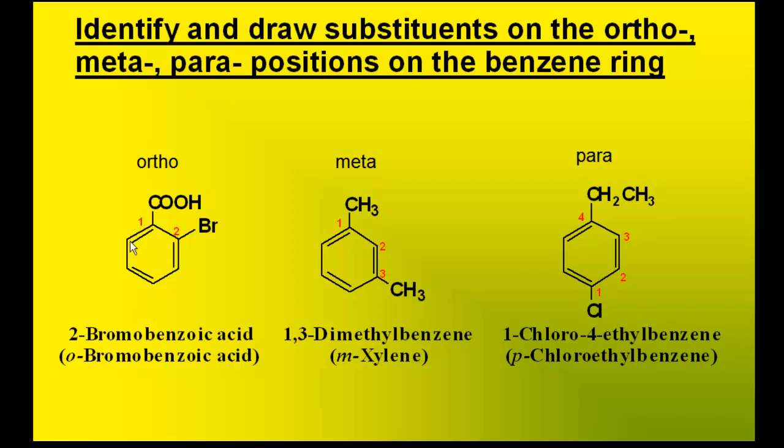A benzene ring, or the carbons on the benzene ring, all have hydrogens bonded to them. Except in this case, on carbons one and two, we have an acid group and a bromine. And when two groups are on adjacent carbons in a benzene ring, the word ortho is used.